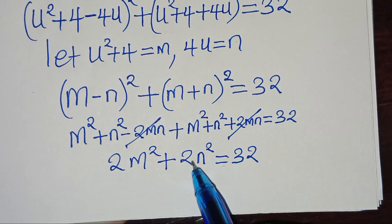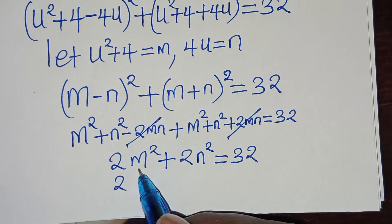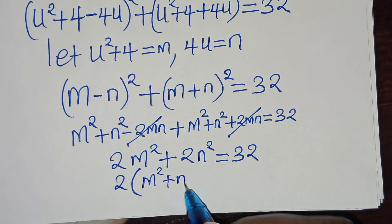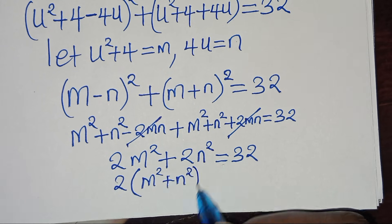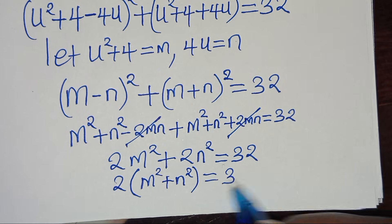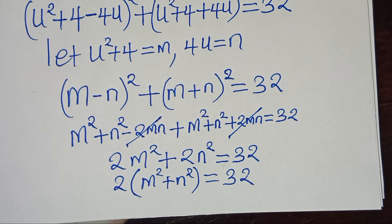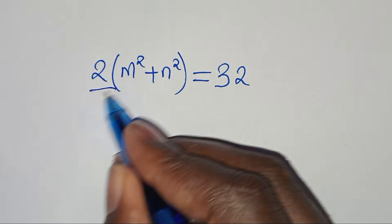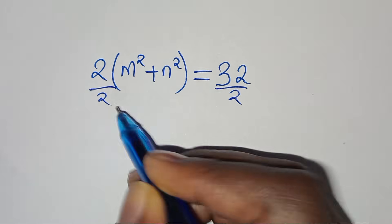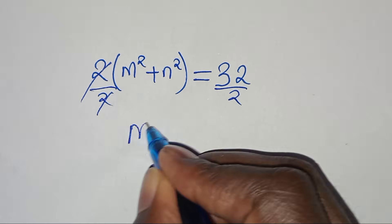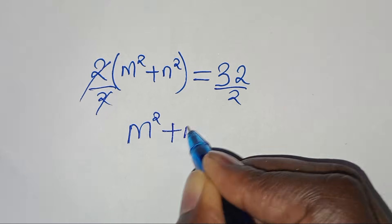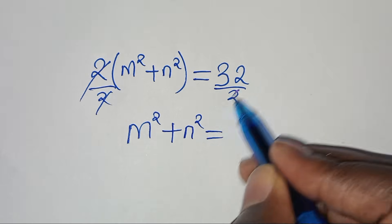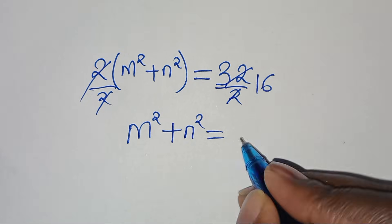Dividing both sides by 2, we have m² + n² equals 16.